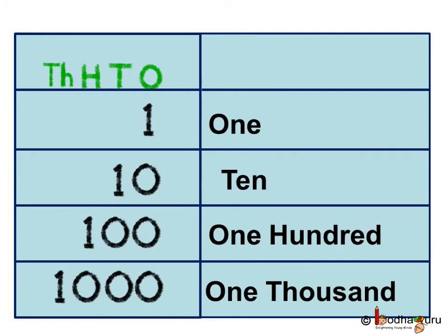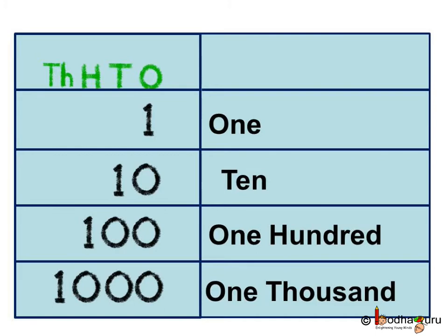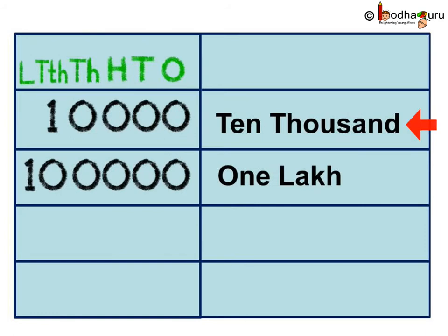Let us revise the place values. This is 1. Next is 10, which has the 1s and 10s place. Next is 100, which has the 1s, 10s and 100s place — it has two zeros. Next is 1000, which has three zeros. Then 10,000 has the 1s, 10s, 100s, 1000s and 10,000s place — it has four zeros.